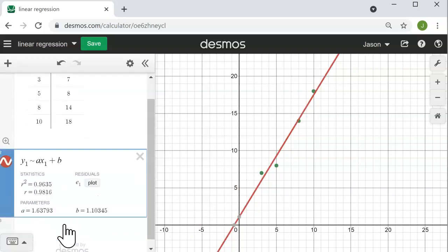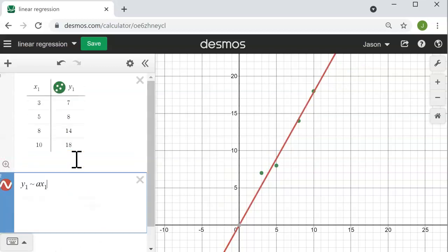Instead of m, I could use a to represent the slope. And if I leave off the plus b, then my regression line will be anchored through the origin.